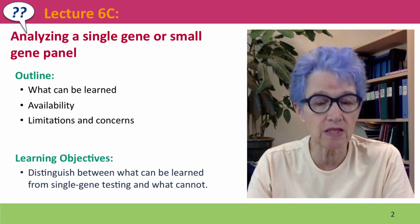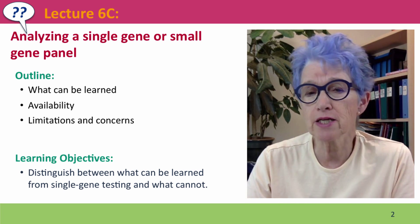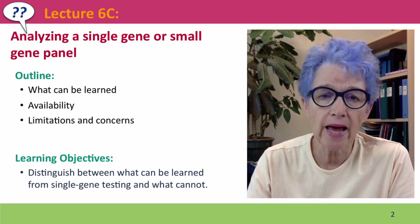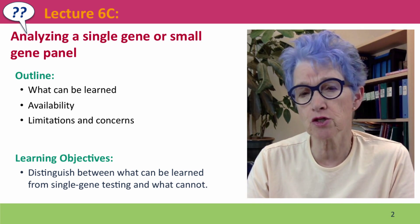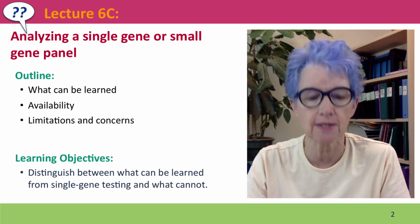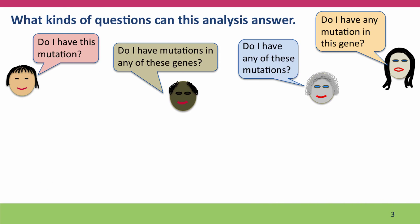We'll talk about what kinds of things can be learned, what determines the availability of these tests, and the limitations and concerns you should have about using them. This kind of analysis can answer really two kinds of questions: is a particular known mutation present, and is any mutation present in particular genes?